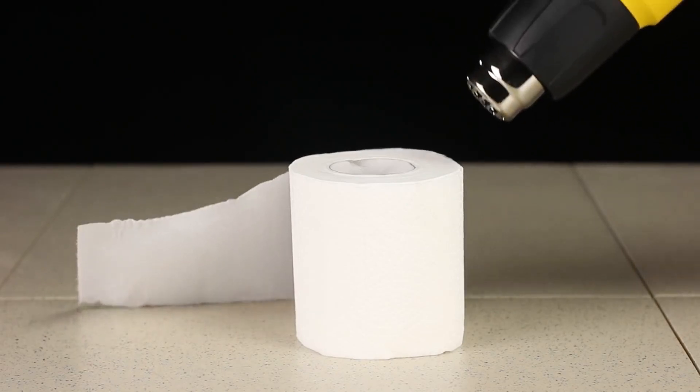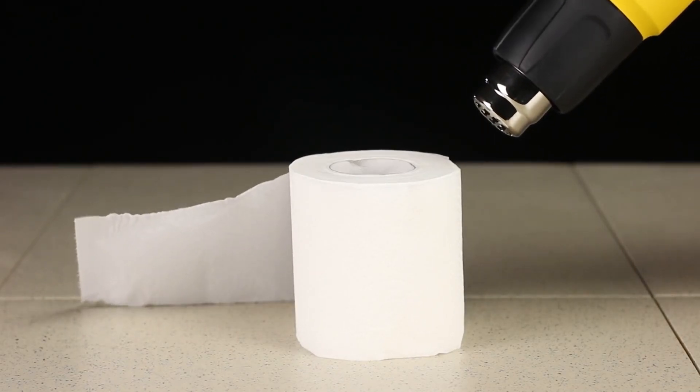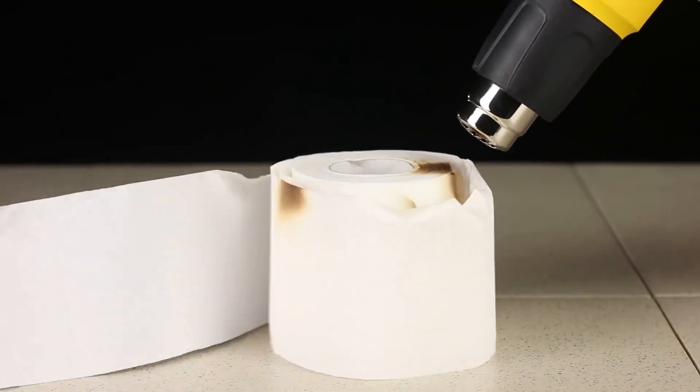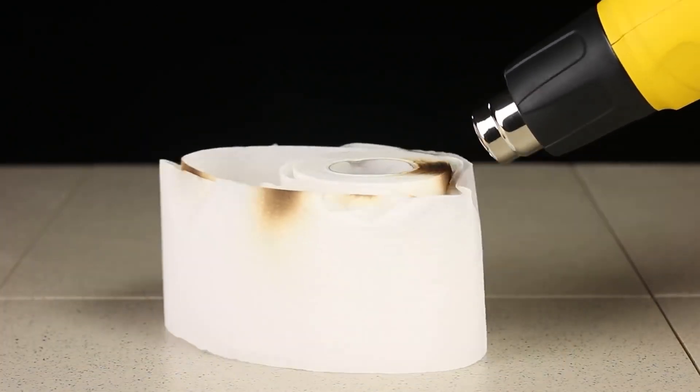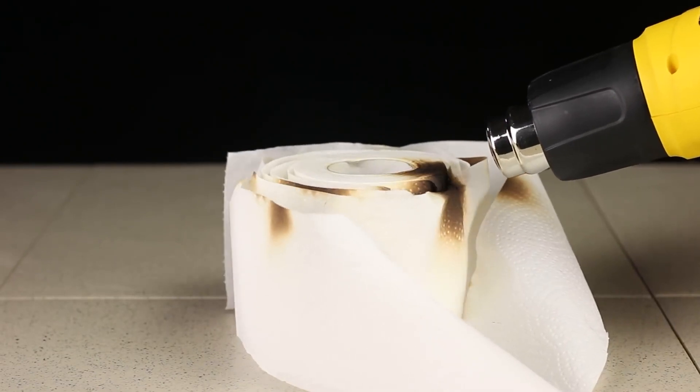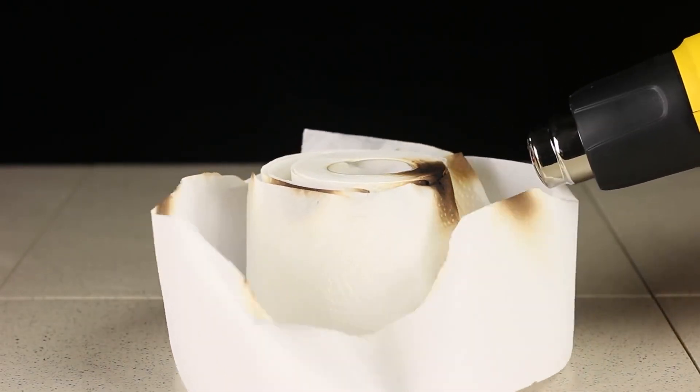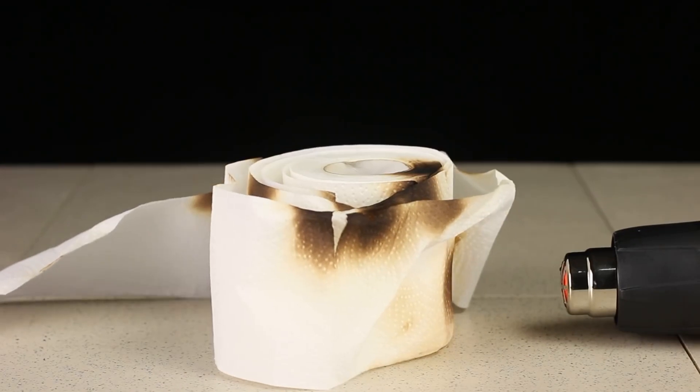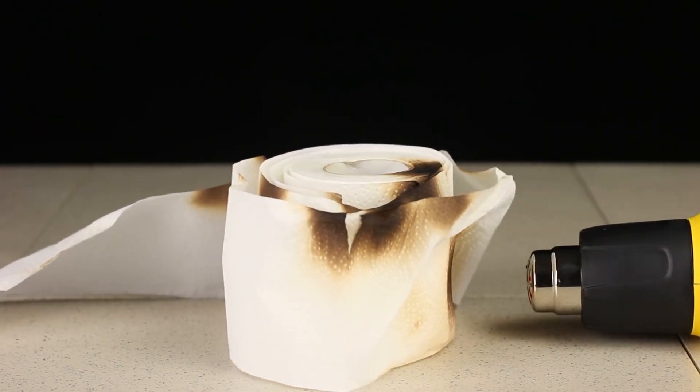Take a roll of toilet paper. Let's see what our hairdryer will do with it. The video will have to be accelerated because the process was not fast. You can see that the paper is gradually changing color, but there's no fire yet. But we're not going to give up. Let's direct all the heat to one point.